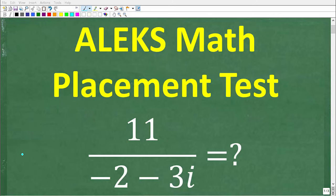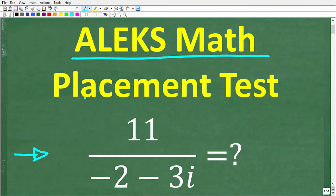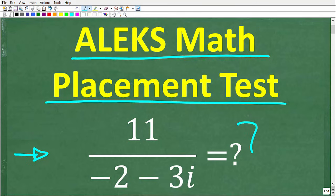If you can't answer this question, you are likely not fully prepared for the ALEKS Math Placement Test. So let's take a look at this question. We have 11 over negative 2 minus 3i, and we need to simplify this complex number.